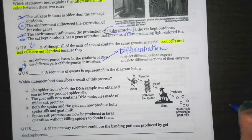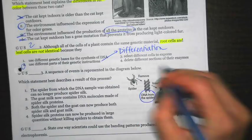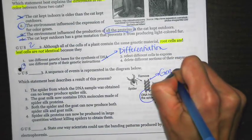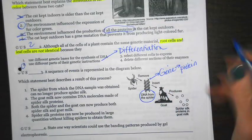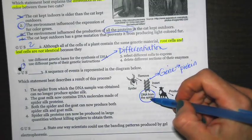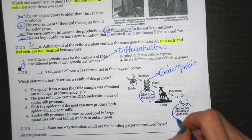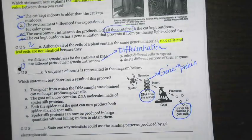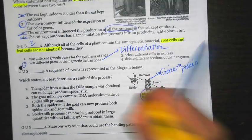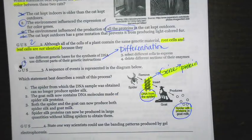A sequence of events is represented in the diagram below, which statement best describes a result of this process. So looking here, they have a spider. They've removed DNA from the spider. Now, not all the DNA. They most likely just were able to remove one gene. Remember, that gene is going to be coding for a specific protein. They put that DNA from a spider into the DNA of a goat. Now, this goat is able to produce a new protein, spider silk proteins in goat milk. So spider silk proteins. And again, where did they get that from? This section or segment of DNA, which is called a gene.